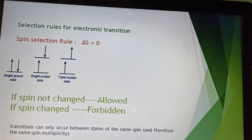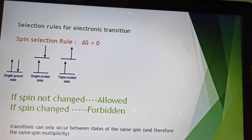The first rule is the spin selection rule. Here, ΔS is equal to 0. In this transition, the electronic transition is from the singlet ground state to the singlet excited state. If the spin does not change, such a transition is called an allowed transition. As we can see, in the singlet ground state and singlet excited state the spins are the same — there is no change — and that is why such transitions are called allowed transitions.